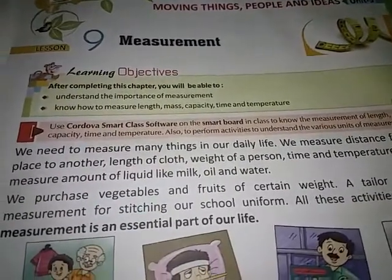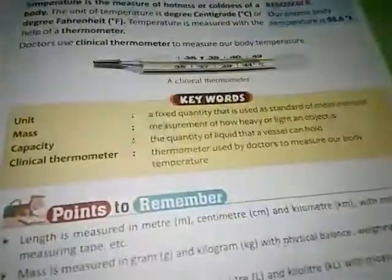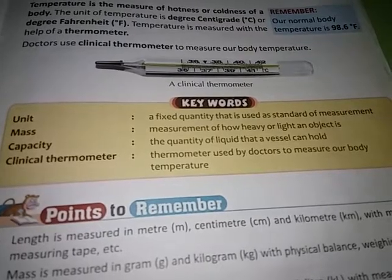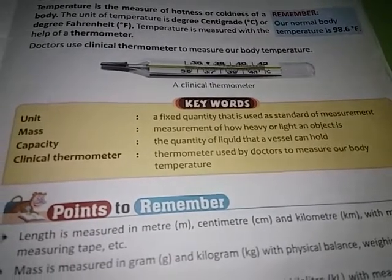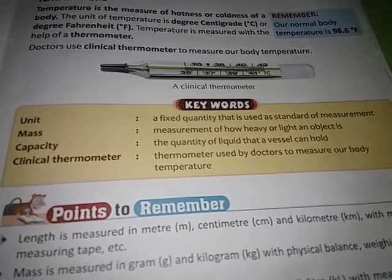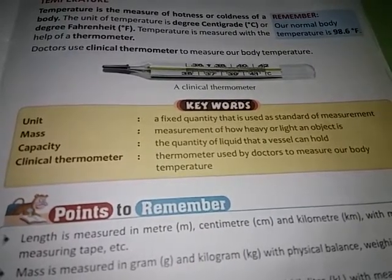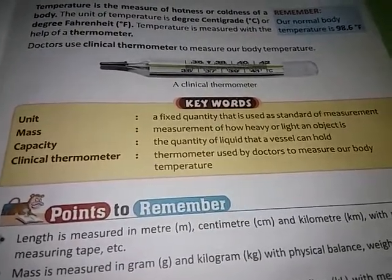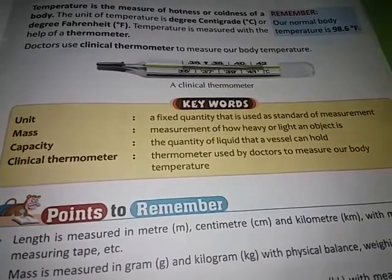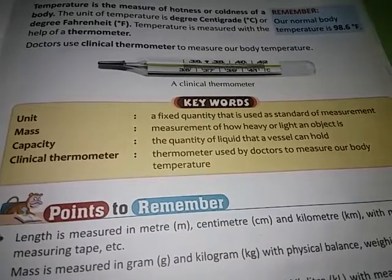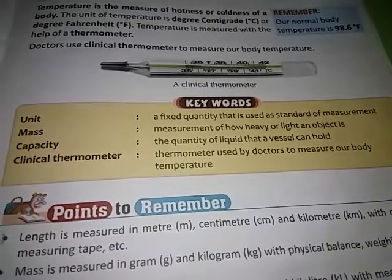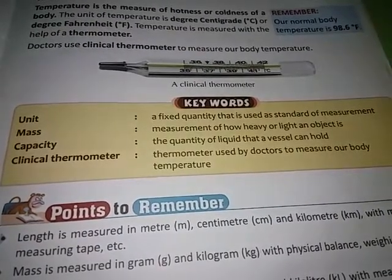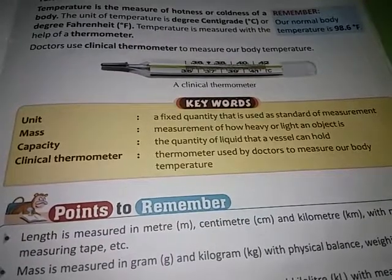Before we start the lesson, let's learn some new words or hard words. You need a fixed quantity that is used as a standard of measurement. Mass is the measurement of how heavy or light an object is. Capacity is the quantity of liquid that a vessel can hold. Clinical thermometer is a thermometer used by doctors to measure our body temperature.